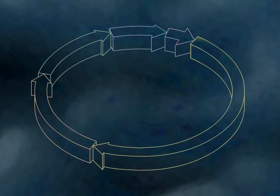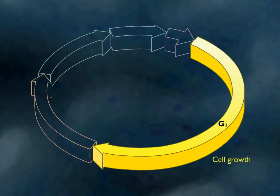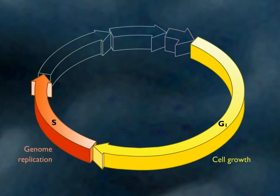Cell growth and division are divided into phases. Cells grow during the G1 phase and the genome replicates during the S phase.